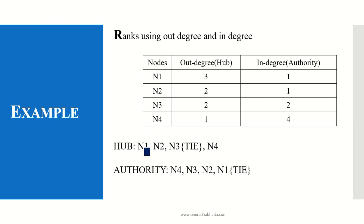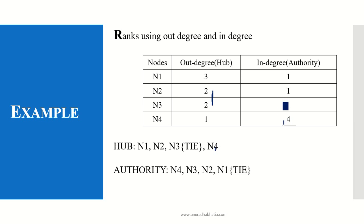This creates a rank using out-degree and in-degree. For the hub, it is N1 because it has the highest out-degree. We rank from highest to lowest: N1 first, then N2 and N3 tied, then N4. For the in-degree (authority), it is N4 first, then N3, and there is a tie between N2 and N1. This is the normal ranking created with out-degree and in-degree.